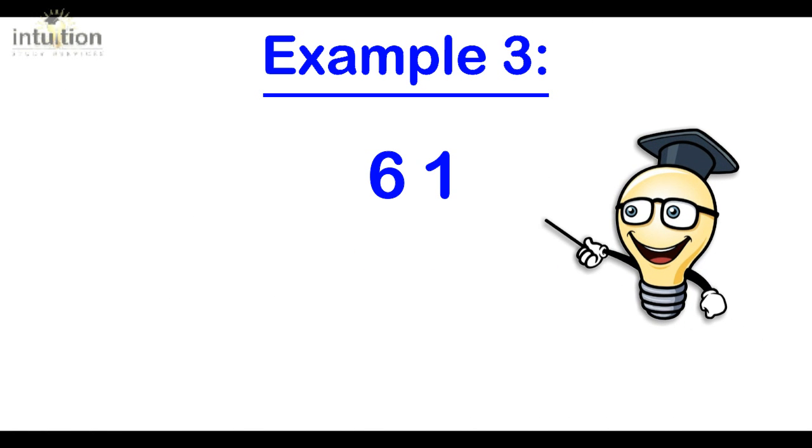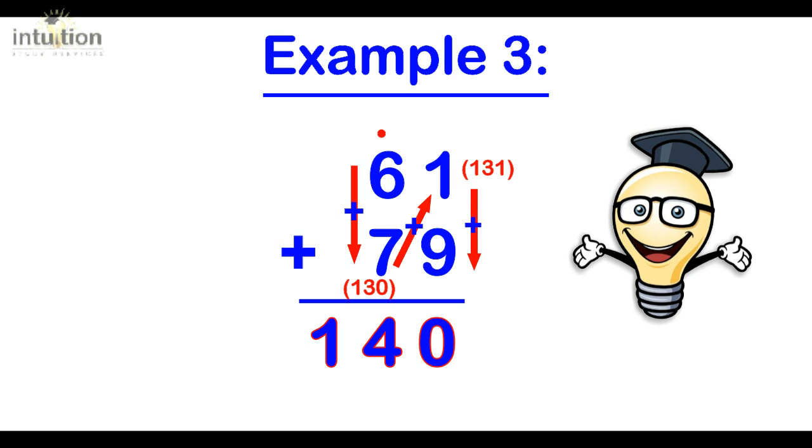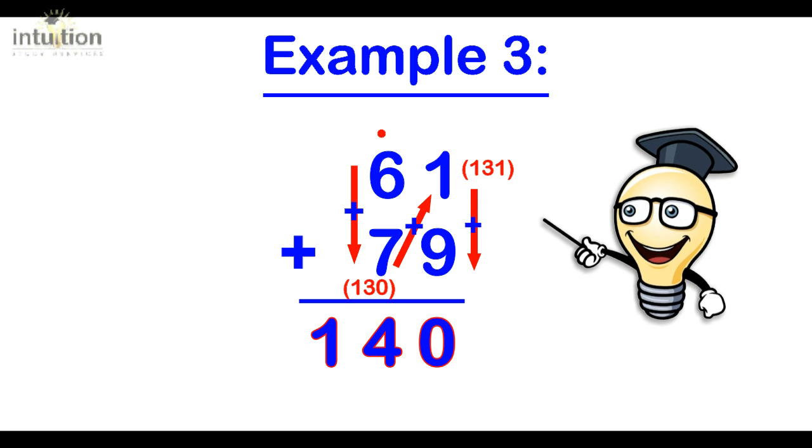Let's take a look at another example. Consider 61 plus 79. We add tens column down, so we have 60, 130, 131, and 140. Can you notice the pattern here? We're going down, across, and then down again, adding as we go along keeping a running total.